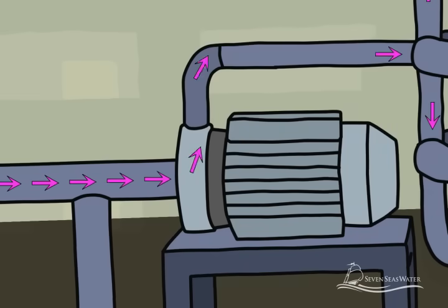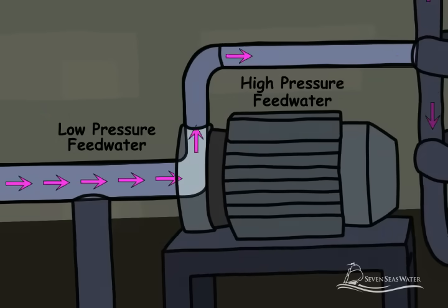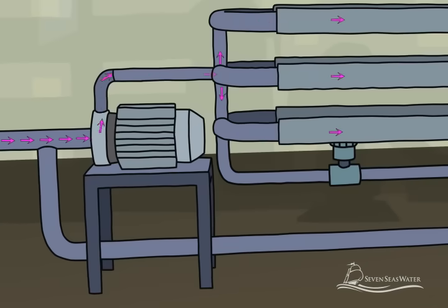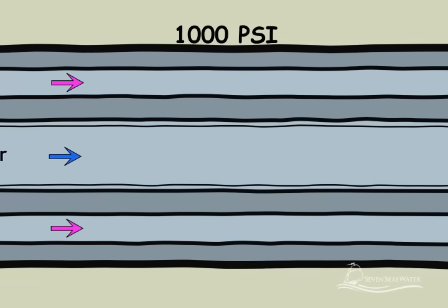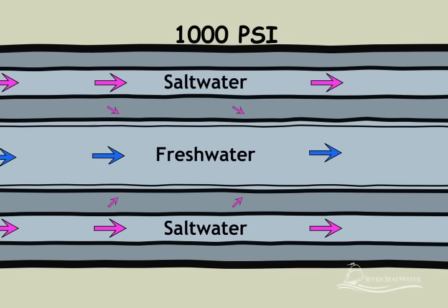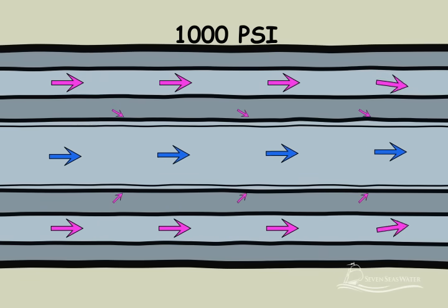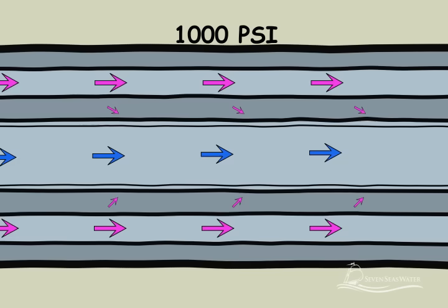High-pressure pumps increase the pressure of the seawater up to 1,000 psi. The pressure needs to be sufficiently high to overcome the naturally occurring osmotic pressure and force water from the saltwater side through the reverse osmosis membranes to the freshwater side.